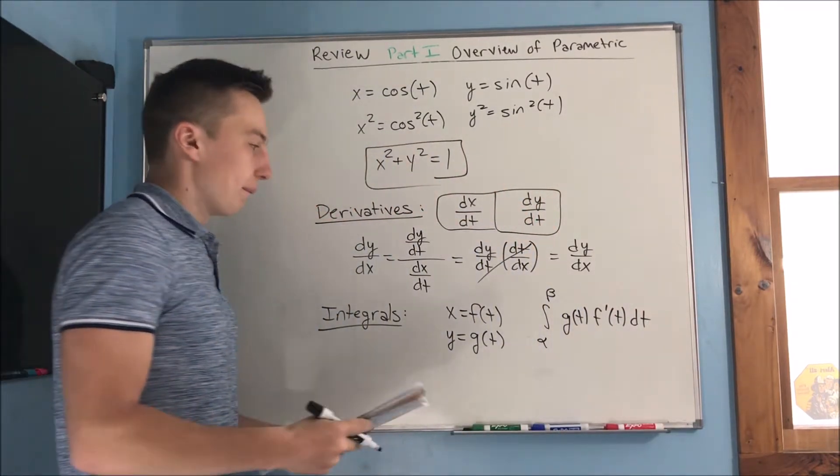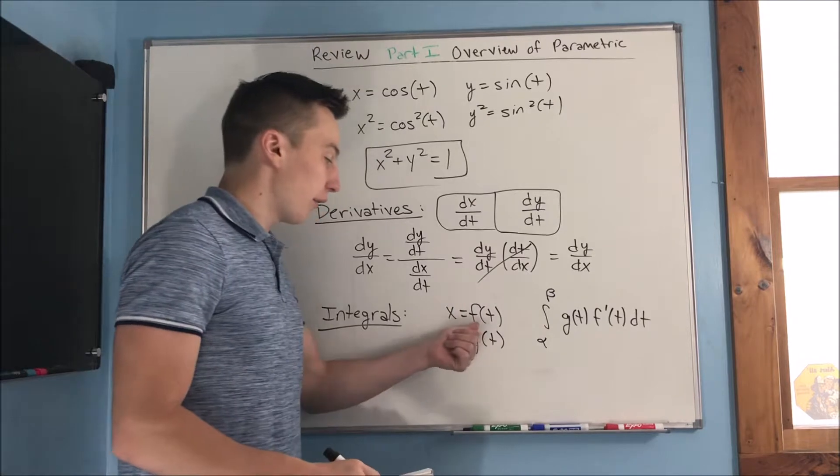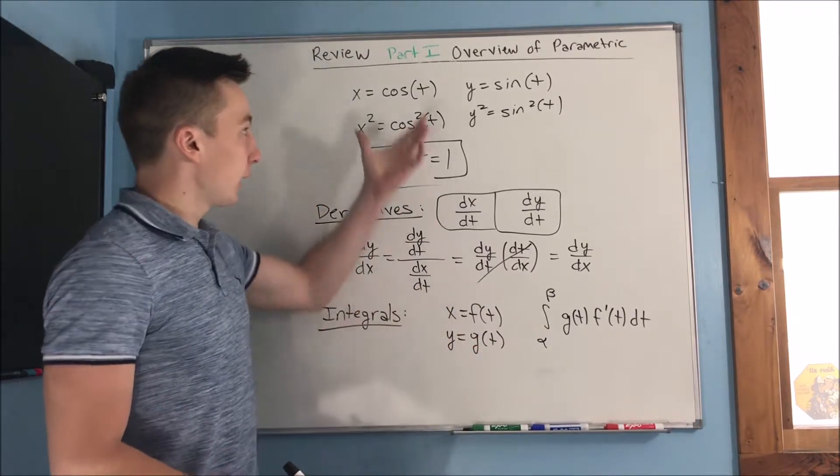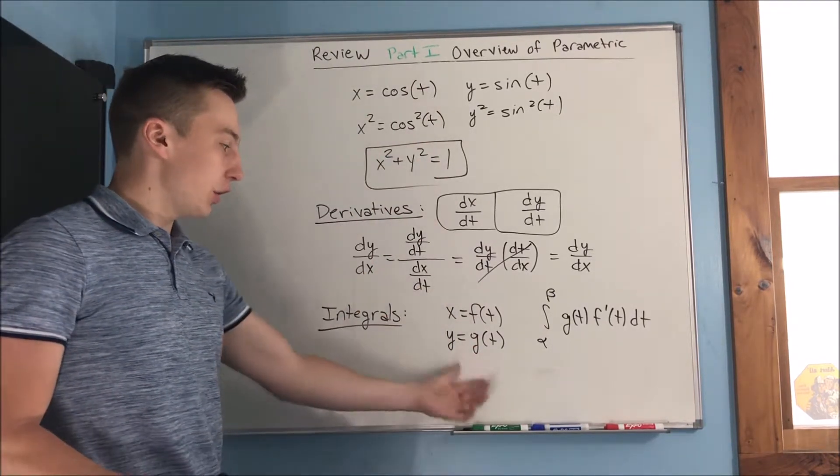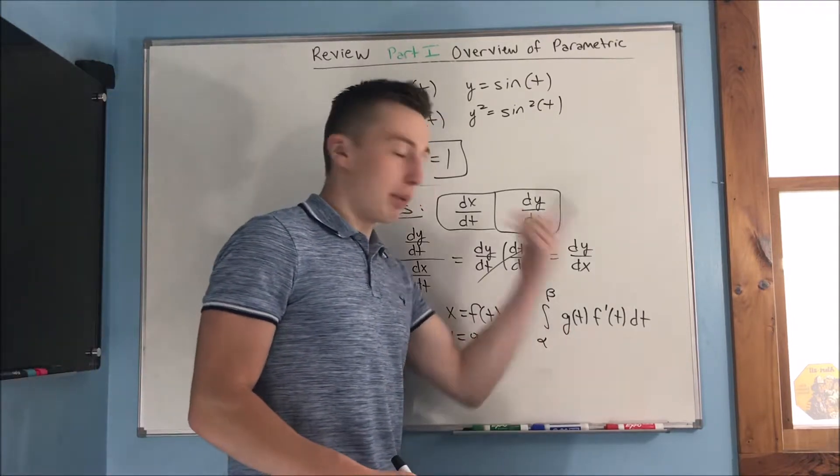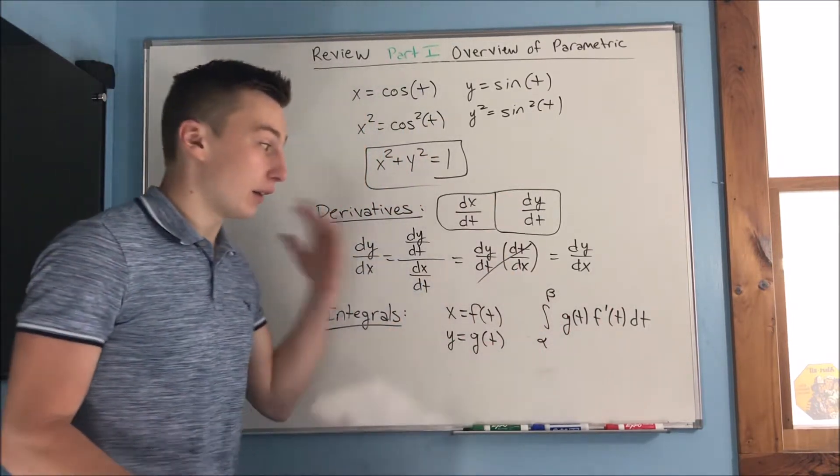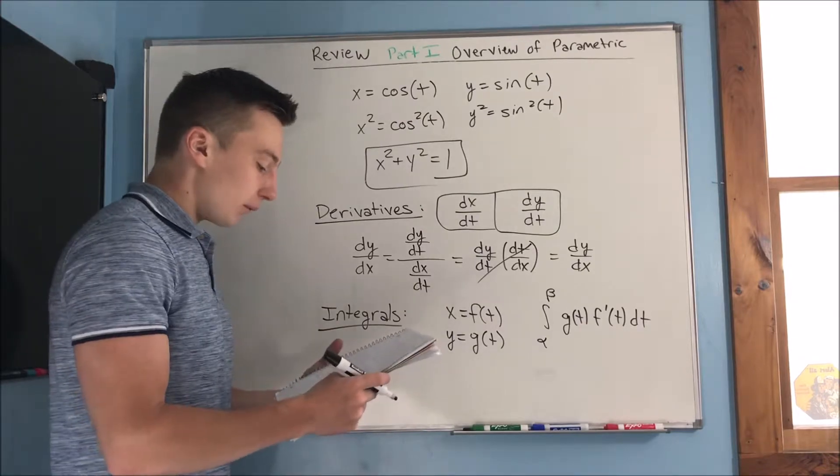You're going to have a g of t times an f prime of t dt. So you're just going to be taking a derivative of your x equals equation, and you put in your g of t, and you slot that together in an integrand, and then go for it.